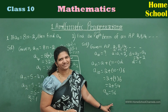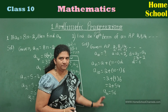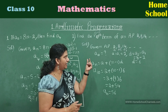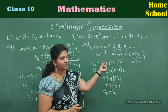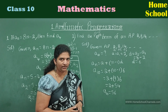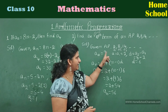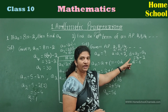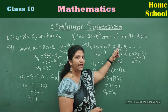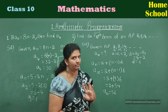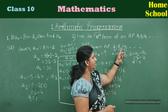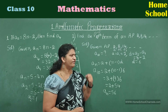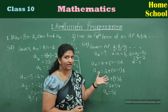Let me recap. From the given arithmetic progression, write a₁, a₂, a₃ and so on. The first term a = a₁. The common difference d = a₂ − a₁. Don't do a₁ minus a₂ — it should be a₂ minus a₁. Here, a₂ = 8, a₁ = 2, so d = 8 − 2 = 6. After getting a and d, you can find any term.